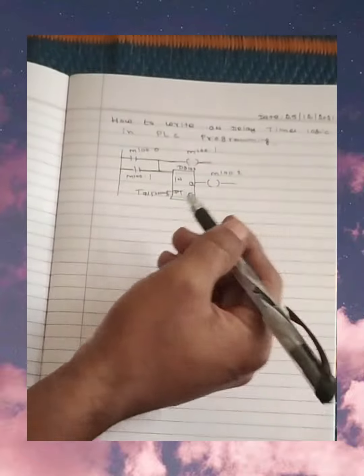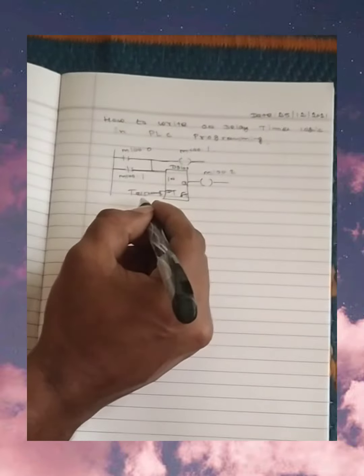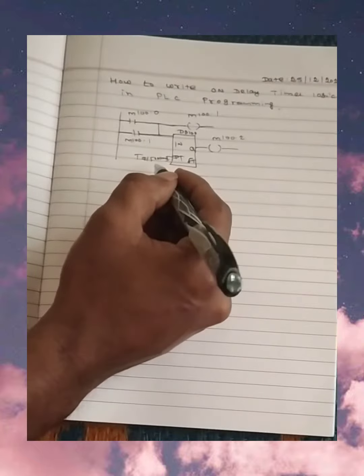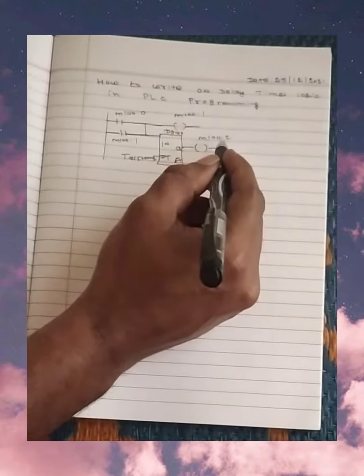The timer will start counting. After the particular counts, here we have given 5000 millisecond, it means 5 seconds. After that my M100.2 will on.